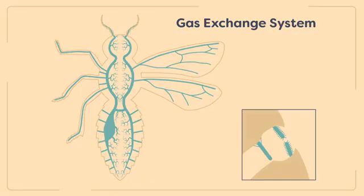Gas exchange refers to the intake of oxygen and release of carbon dioxide between organic tissues and the environment. As we have discussed previously, gas exchange in insects is achieved by a network of tubes lined with cuticle, known as tracheae, located throughout the body. The cuticular lining is reinforced along most areas by spiral thickenings that prevent it from collapsing while still retaining flexibility. Because they are cuticular in nature, these linings are shed with the rest of the exoskeleton and replaced every time the insect molts.